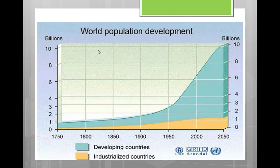If we just follow the graph, in 1750 the world's population was just below a billion. Over time it's taken almost 200 years for the world's population to actually double. Since effectively 1940, the world's population has been rapidly increasing up to our present-day figure of 7 billion, and to our future projected figure of just over 10 billion by 2050.